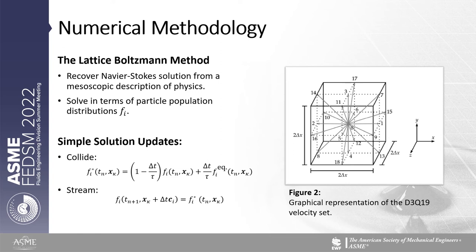The Lattice-Boltzmann method simulates fluid flow from a mesoscopic description of the physics rather than a macroscopic one. The numerical solution of the Navier-Stokes equations is recovered in terms of particle population distributions. In addition to discretization in space and time, the method involves additional discretization along velocity sets. Velocity elements are associated with a particle distribution representing the density of particles with that particular velocity. There are two main components of a single time step: collision and streaming. In a single relaxation time lattice Boltzmann method, collision results in relaxation towards an equilibrium distribution at a relaxation rate specified by the viscosity of the fluid. Particle distributions are then streamed in the direction of their corresponding velocity element.